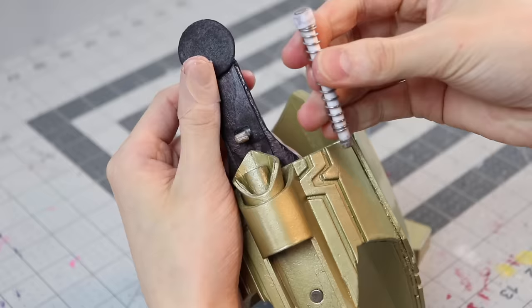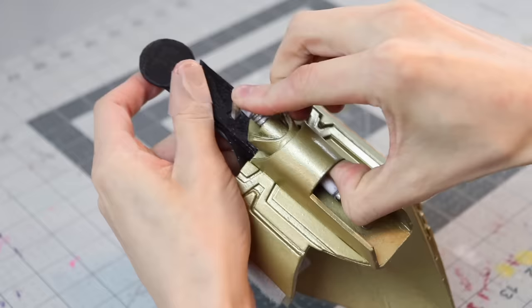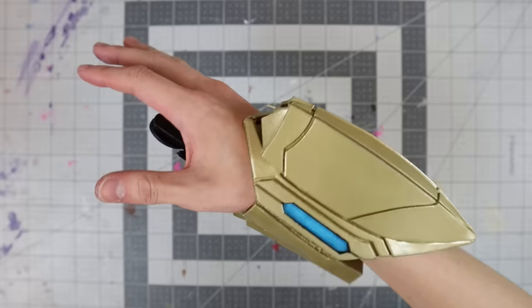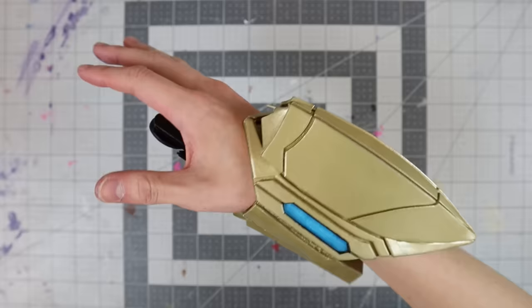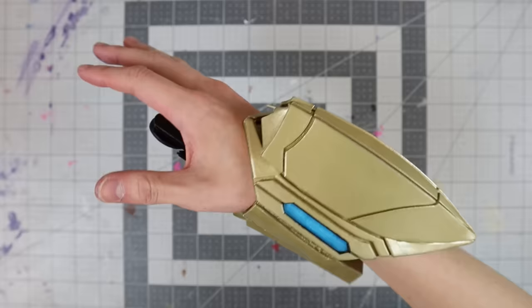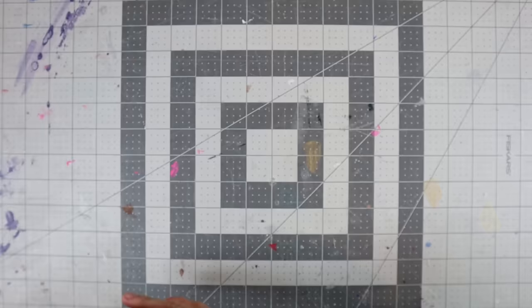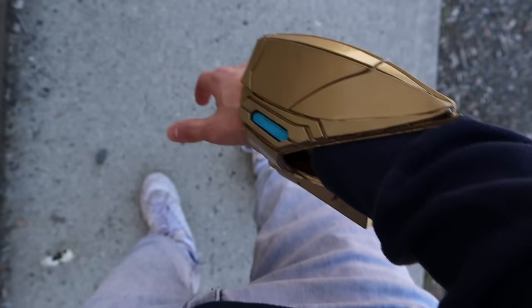To shoot the web shooter, you first need to load the projectile into the barrel like this. Then simply insert the web cartridge, and doing this will make the magnet on the string clip onto the back of the projectile. With a little bit of practice, you can start catching the string, and that'll allow you to grab onto metal objects.